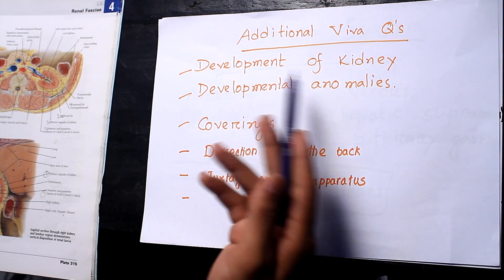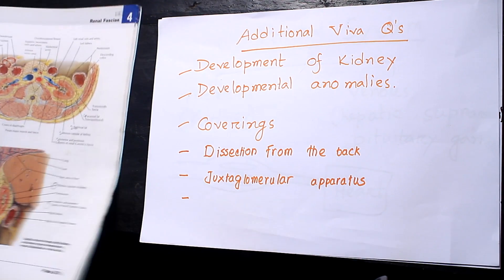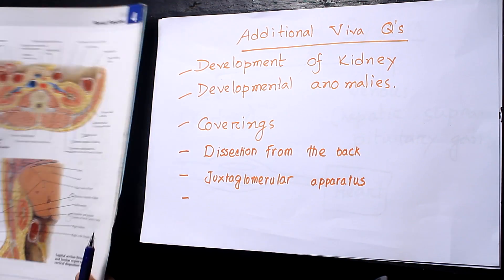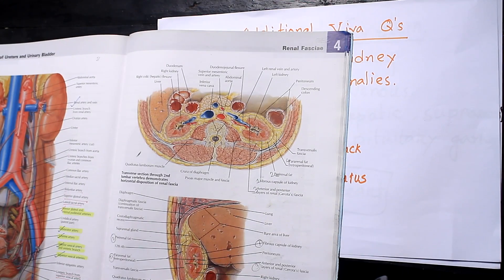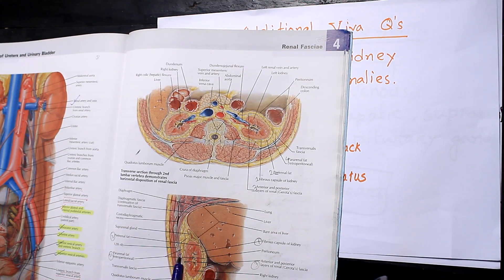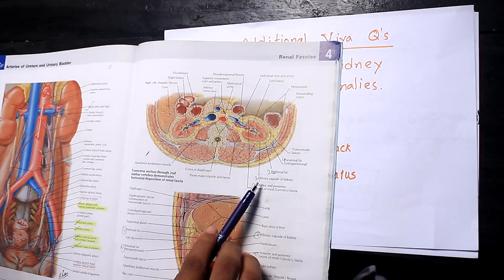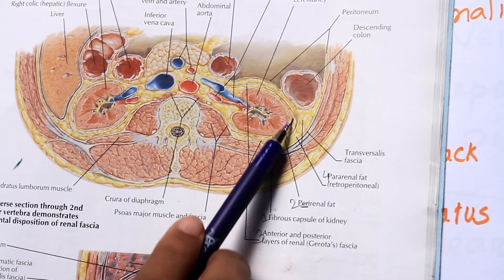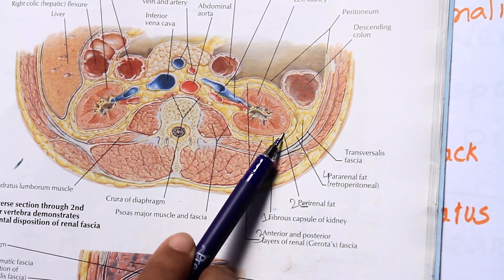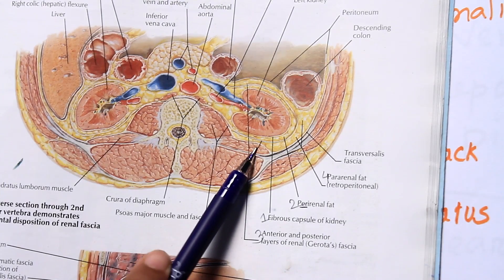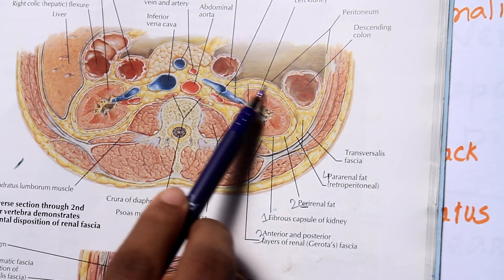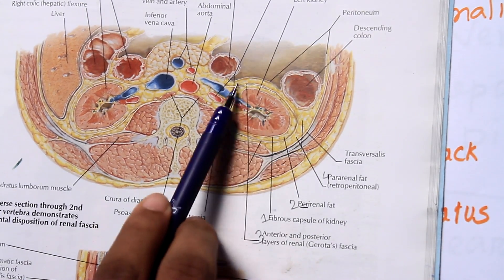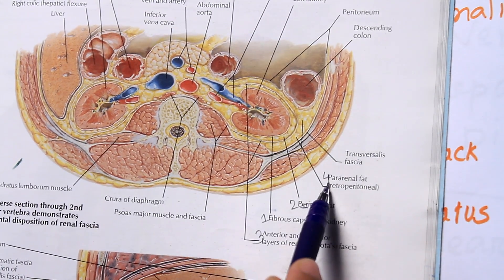Additional topics for further study include: development of the kidney and its anomalies, coverings of the kidney, dissection from the back (how many layers to pass), and the juxtaglomerular apparatus. The coverings of the kidney from inward to outward are: fibrous capsule of the kidney, perirenal fat, and the renal fascia with its anterior and posterior layers surrounding the perirenal fat.